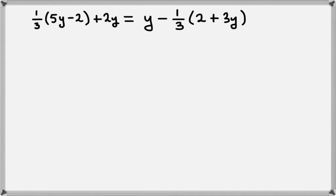Now let's look at some equations that have both parentheses and fractions. The first we'll look at is 1 third times 5y minus 2, plus 2y, equals y minus 1 third times 2 plus 3y.